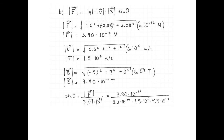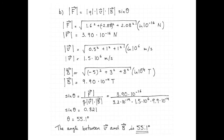The sine of the angle is given by the magnitude of the force divided by the magnitude of the charge times the magnitude of the velocity times the magnitude of the magnetic field: 3.90 times 10 to the negative 16 Newtons divided by 3.2 times 10 to the negative 19 Coulombs, times 1.5 times 10 to the 6 meters per second, times 9.9 times 10 to the negative 4 Tesla. The sine of the angle is 0.821, which means the angle between the velocity vector and the magnetic field is 55.1 degrees.